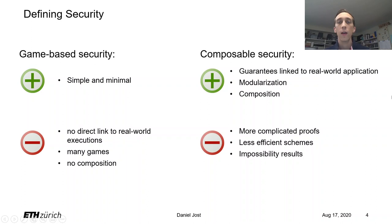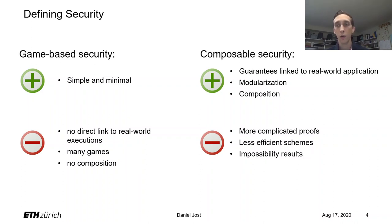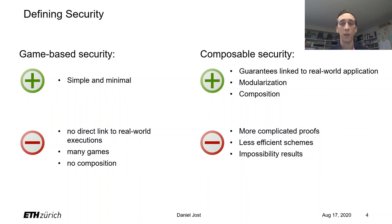On the other hand, there are so-called composable or simulation-based security notions. As they compare an execution of the real protocol to the one of an idealized protocol, such a mismatch between the security notion and an execution of the protocol cannot exist. Moreover, as they come with a composition theorem, we can easily build modular protocols without having to prove reductions at every step. The downside however is that those security notions are very strong and thus lead to less efficient schemes or in many cases even impossibility results.